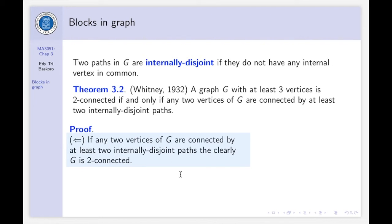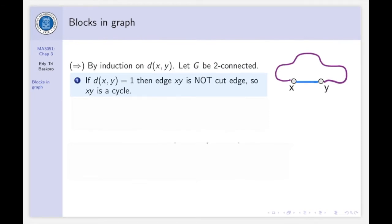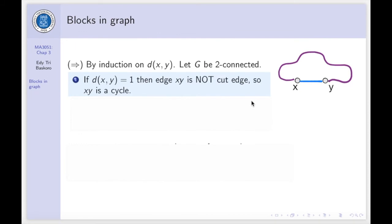So it's clear that G must be two connected. Now, we are going to show you from left to right. We prove by induction on the distance of X and Y. Let G be two connected. So if we have an edge, then if the distance between X and Y is one, then we have an edge XY. And because G is two connected, then an edge XY is not cut edge. So, an edge XY is in a cycle. That means the vertices X and Y are in the two internally disjoint paths.